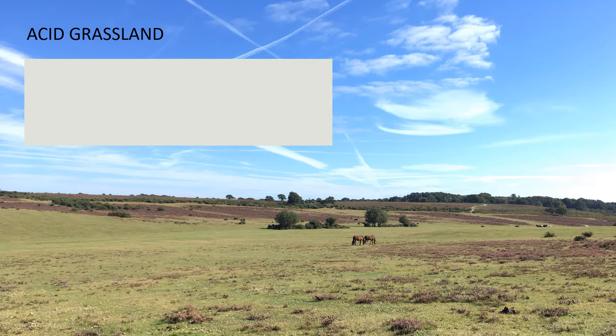We'll start off with acid grassland — here's a nice picture of some acid grassland in the New Forest. Acid grassland and heathland typically occur on soils derived from sandstones and igneous rock. What we're lacking here is any of the chalk or limestone so prevalent in other parts of the UK. Because the soil is derived from sandstones, this habitat can actually be extremely sandy — you often see it where footpaths or trackways erode straight off the bedrock — and this pushes the soil pH down into acidic regions.